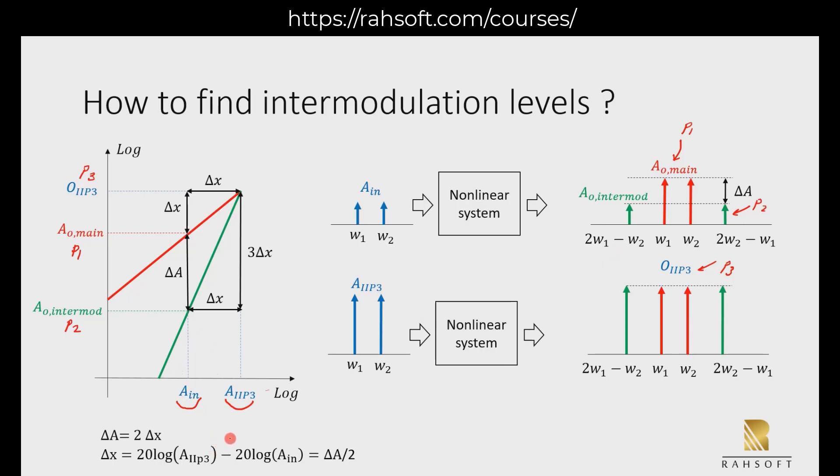Now the most important part, we have to do our calculation and come up with an expression. Assuming that this red line is a first order line, because this is gain times A_in. If you remember, we talked about this multiple times. This is actually alpha 1 A_in, but this one is 3 over 4 alpha 3 A_in to the power of 3. So this is actually first order and this one is third order.